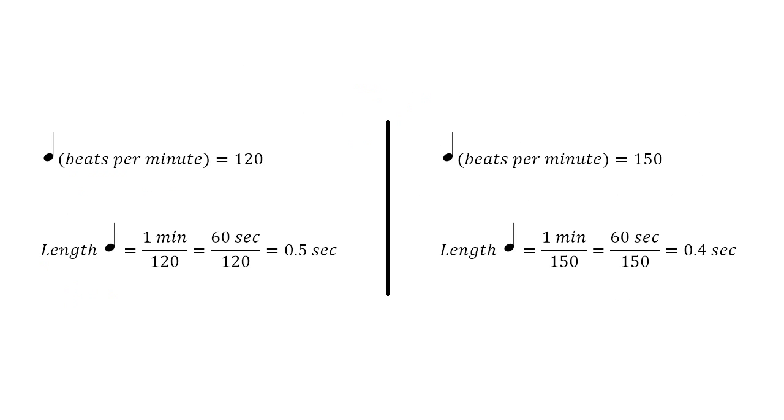For example, if a musical composition has quarter note beats and a BPM value of 120, the duration of a quarter note would be 0.5 seconds. But if it had a BPM value of 150, then the same musical note would be 0.4 seconds long instead.